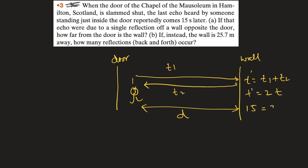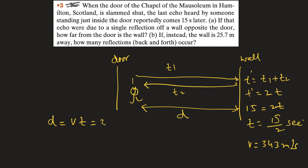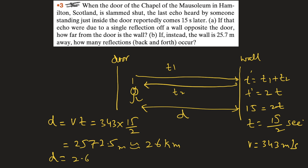It means it takes 15/2 seconds to cover the one-way distance d between the wall and the listener. Using d = v × t, with velocity 343 meters per second and time 15/2 seconds, we get approximately 2572.5 meters, or approximately 2.6 kilometers. This is the answer for part a.